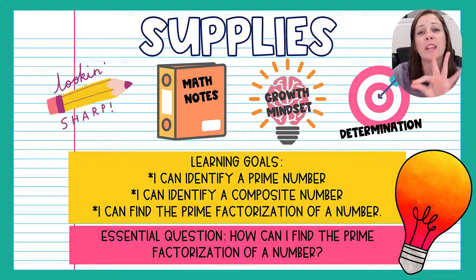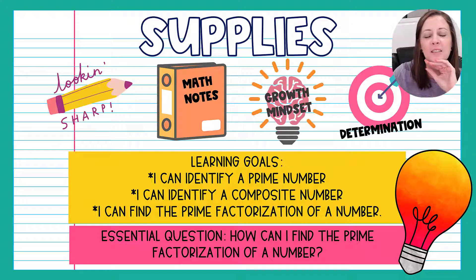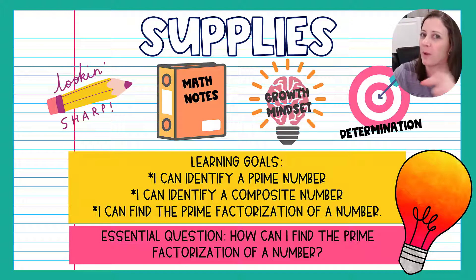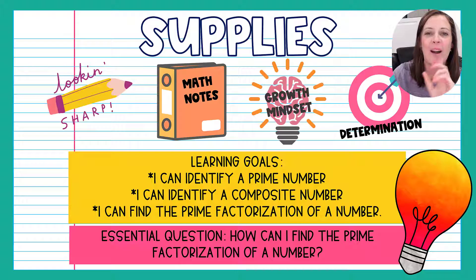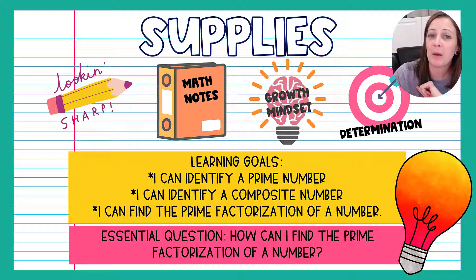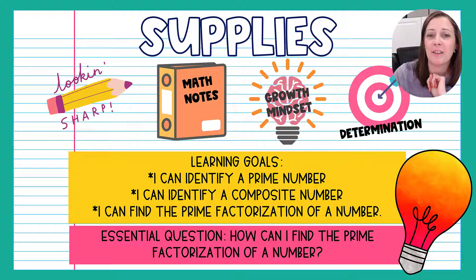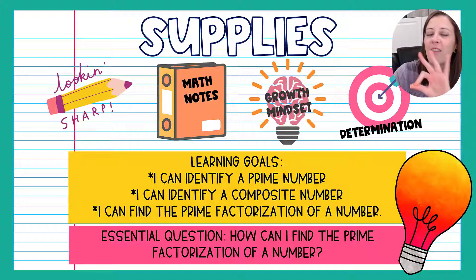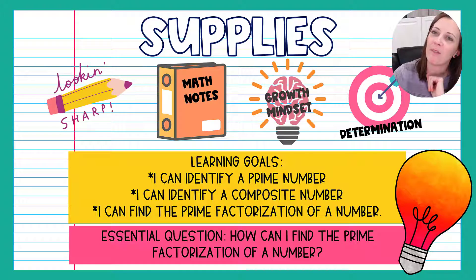We have three learning goals today. One, I can identify a prime number. Two, I can identify a composite number. And three, I can find the prime factorization of a number.